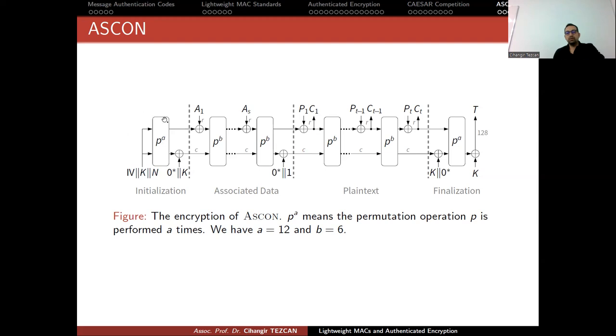So you mix the internal state. Here you XOR this 320-bit internal state with your secret key concatenated with zeros at the beginning. This is your initialization phase. Now you are ready to encrypt. If you have associated data, you feed your associated data R-bits here. This is your rate. So you XOR R-bits of your internal state with this block and perform the permutation 6 times, adding your associated data.